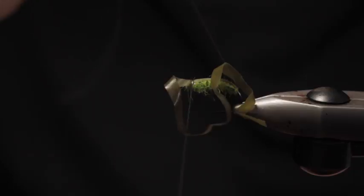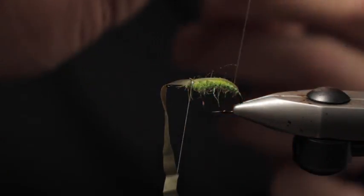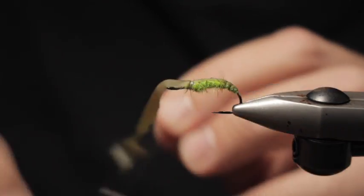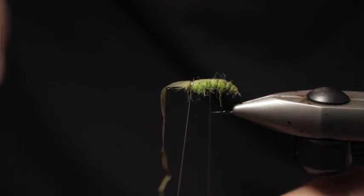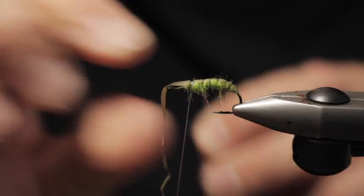So you can see I create a little thread area up front there. Kind of got to work around a few things there. But as we start to progress, you're going to create some cool body segmentation here. And you'll really get more of that larva look to start.